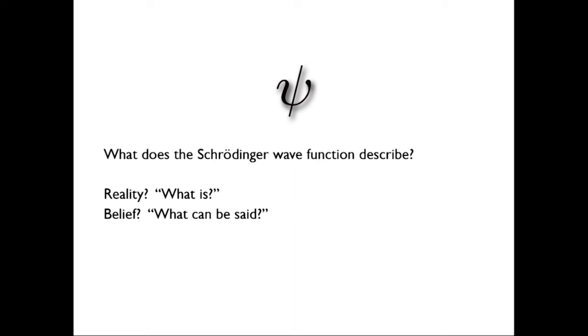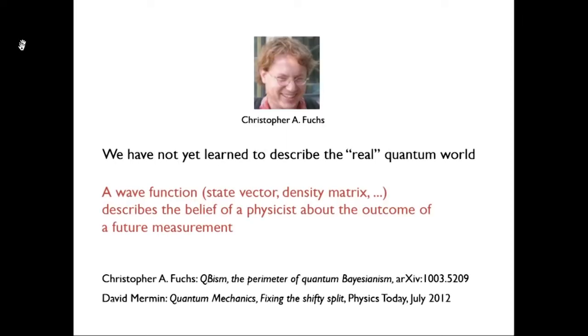Even though we have the Schrödinger quantum mechanics and quantum field theories, the debate continues. What really does quantum mechanics describe? In particular, what does the Schrödinger wave function describe? Does it describe reality? Does it describe what is? Or does it describe belief? Does it describe what can be said? There's an interesting minimal interpretation called QBism that has been advertised, one of its proponents has been Christopher Fuchs for ten years or so. This minimal interpretation has been highlighted by David Mermin in the July issue of Physics Today.